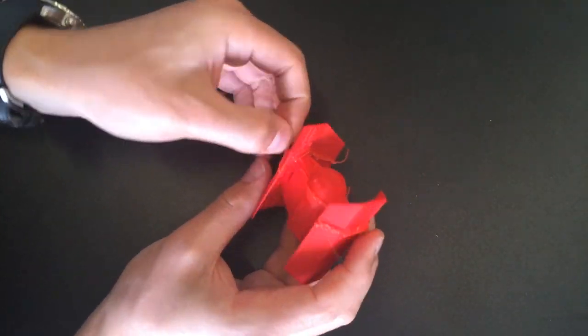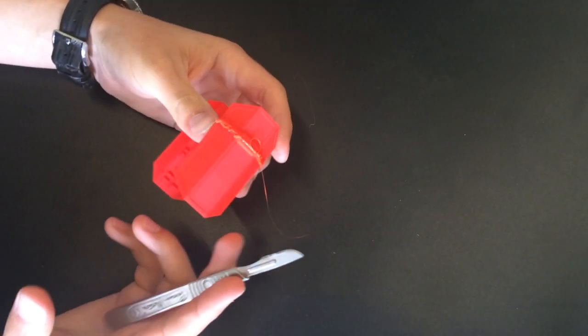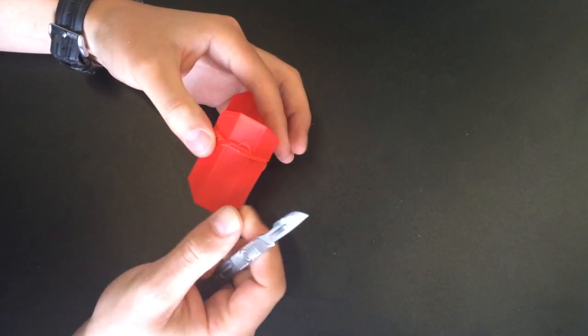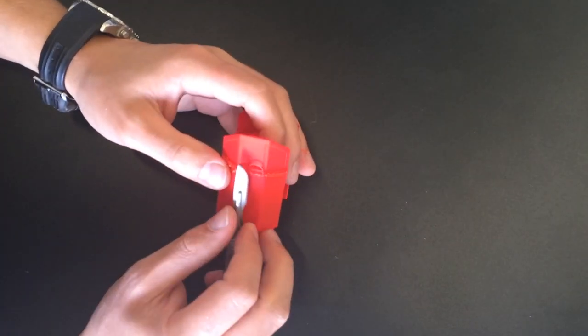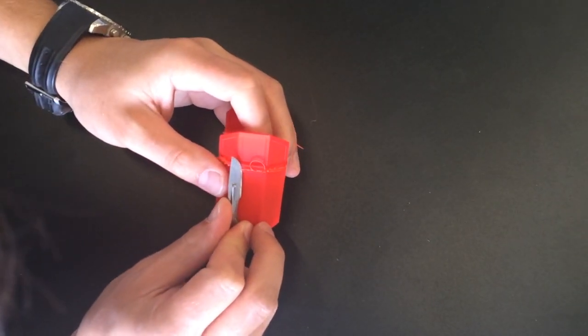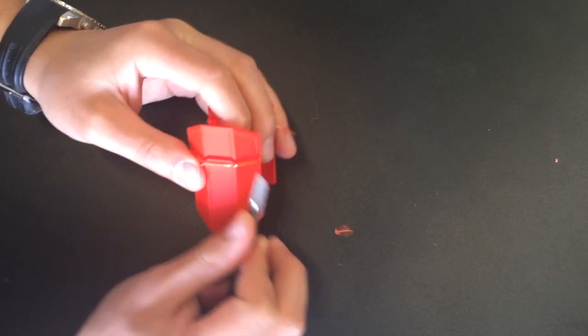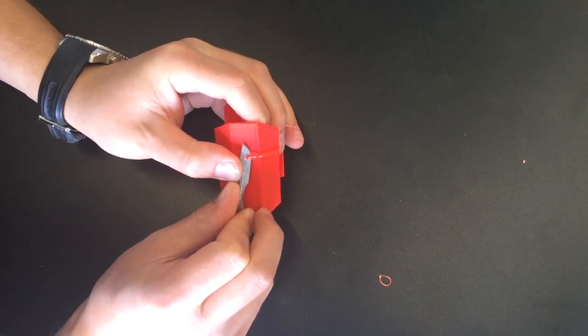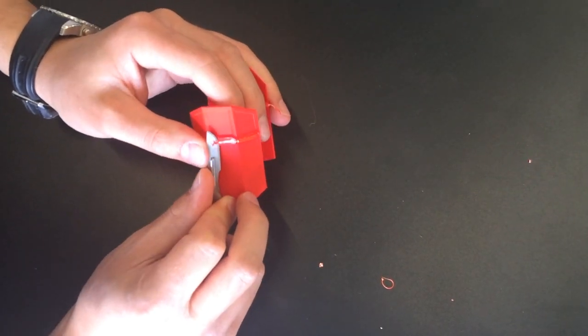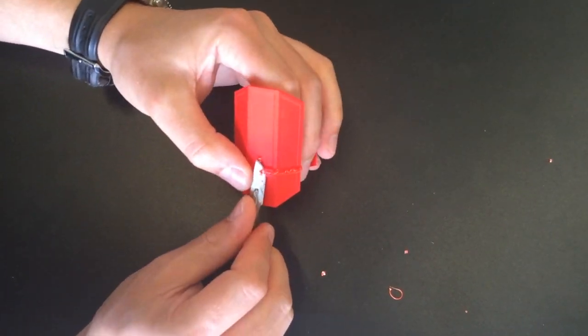So here's the print all filled and just remove any stringy parts of filament and then we're going to take a scalpel and just remove any of the excess filament and try and get the print down to a nice smooth finish. This might take a little while but once it's done you'll have a really nice result.